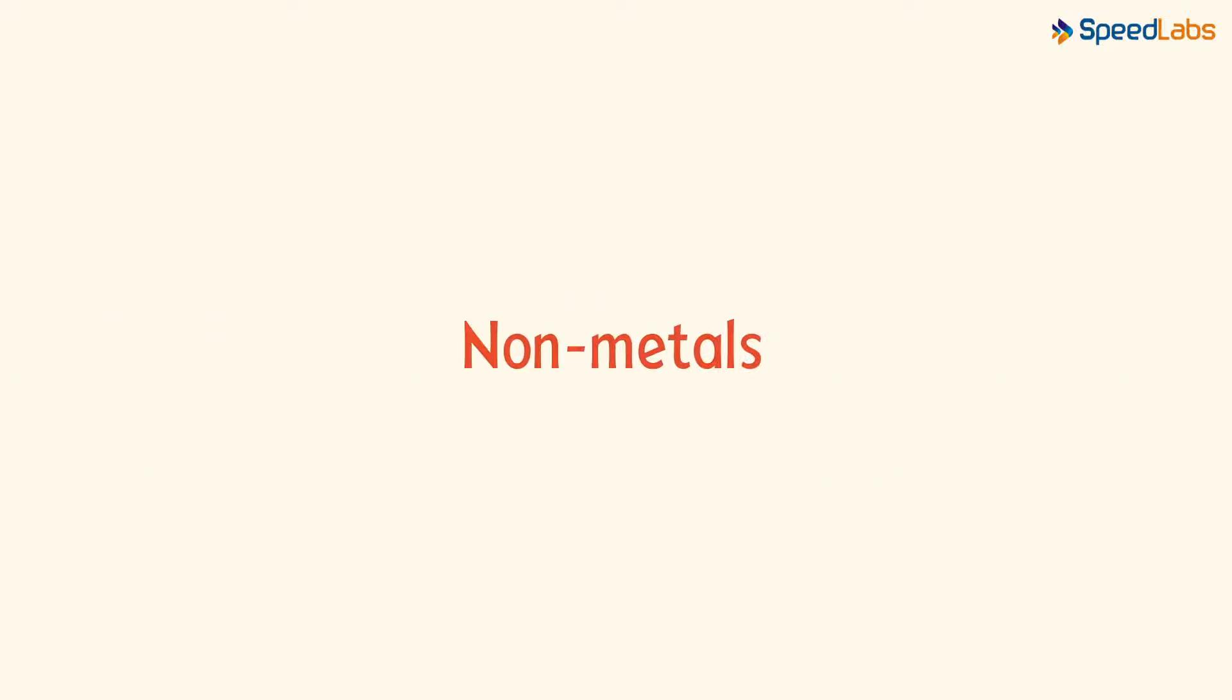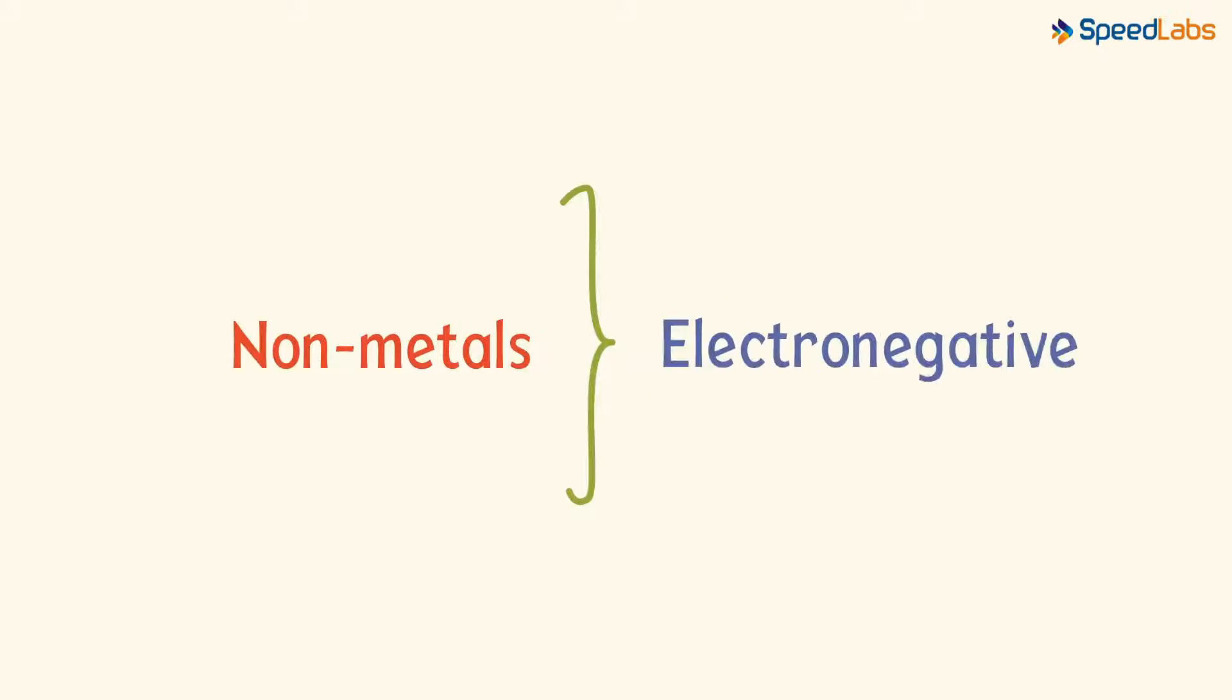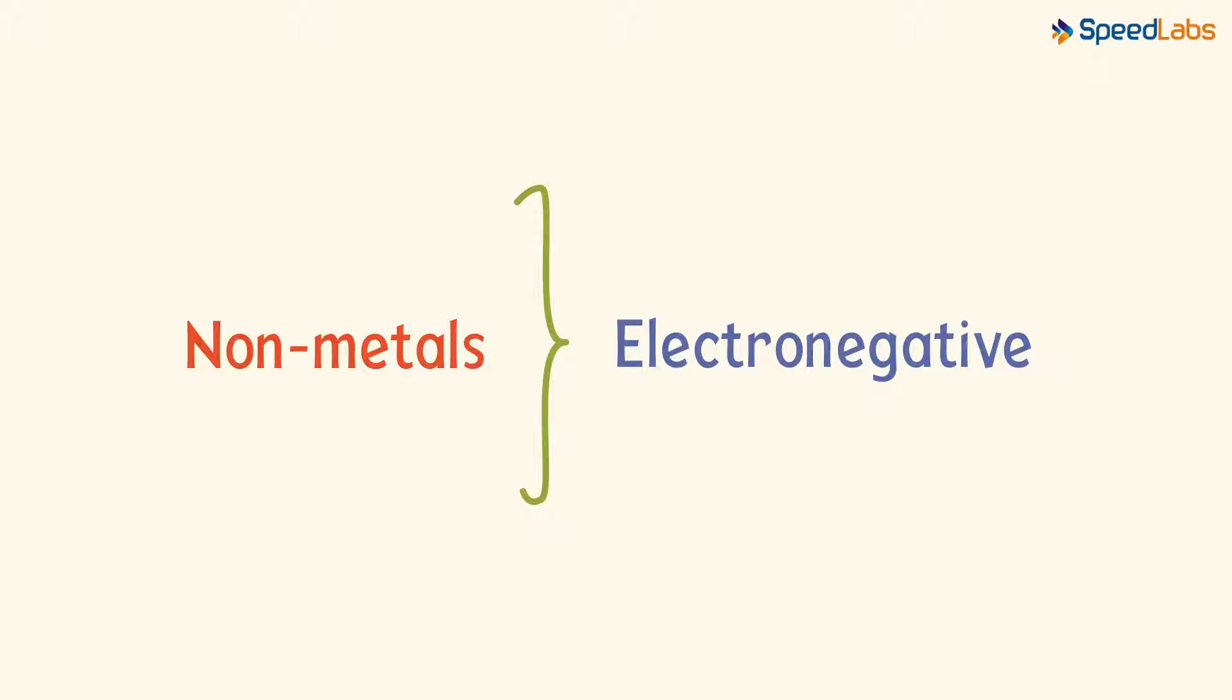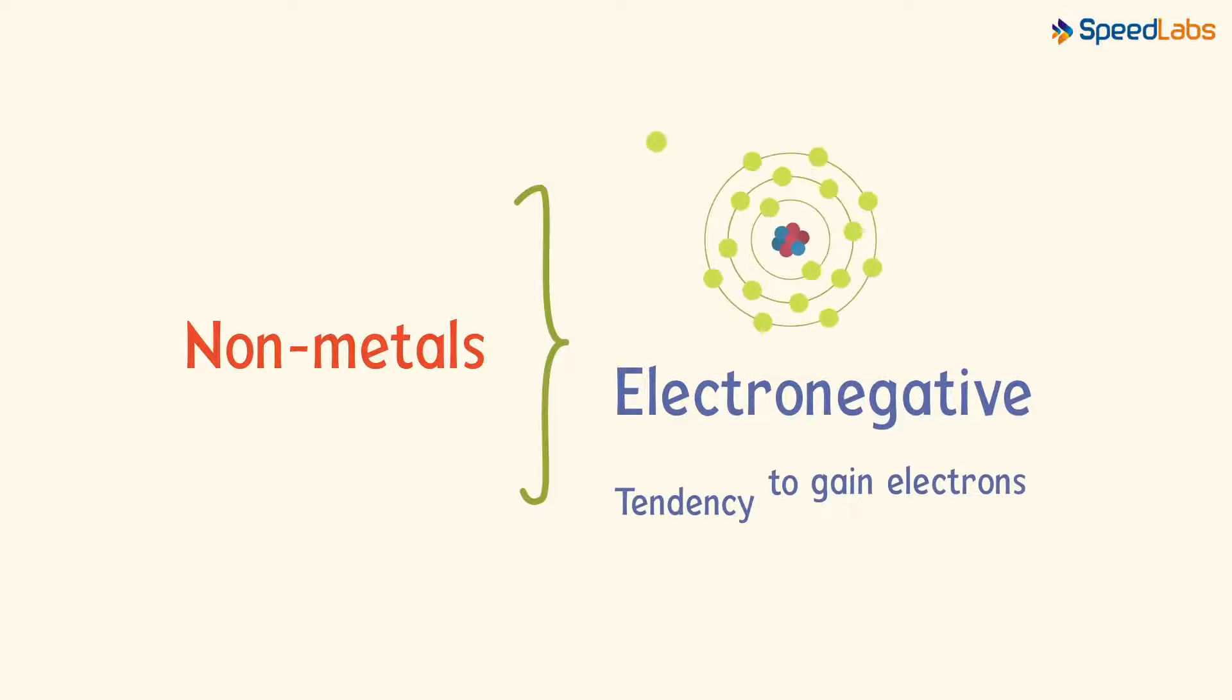On the contrary, non-metals are electronegative in nature. And I think you can guess what that means. Yes, they have the tendency to gain electrons and form anions.